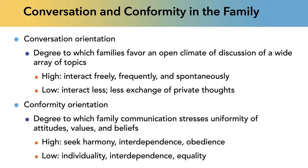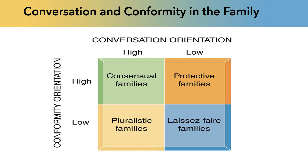The other area is conformity orientation — how much does family communication stress following the rules, such as having the same attitudes, values, and beliefs? If it's high conformity orientation, the family seeks harmony, interdependence — what you do reflects on the family — and obedience. If there is a low conformity orientation, then the family communication stresses individuality and independence.